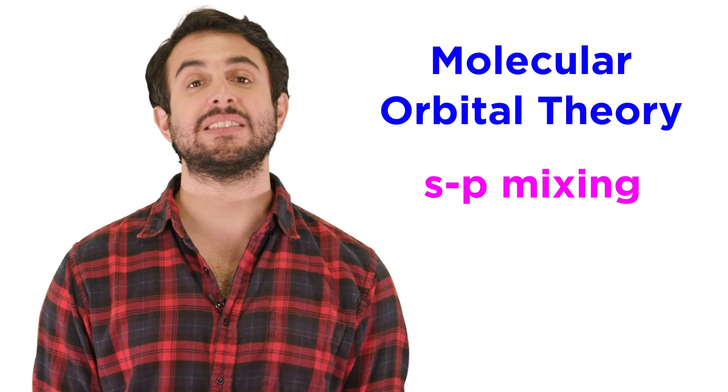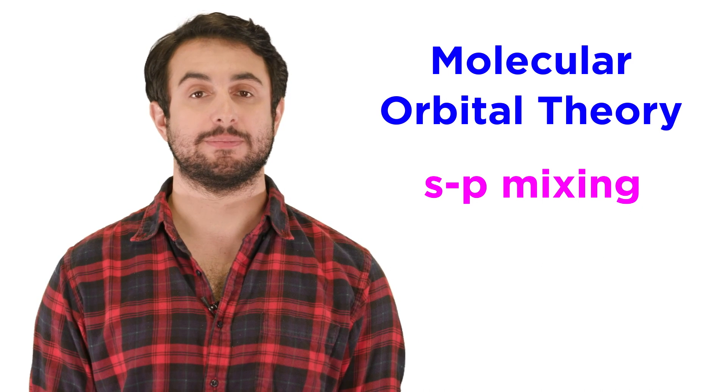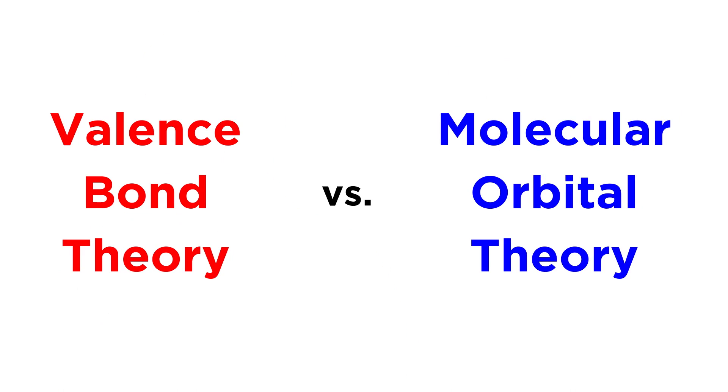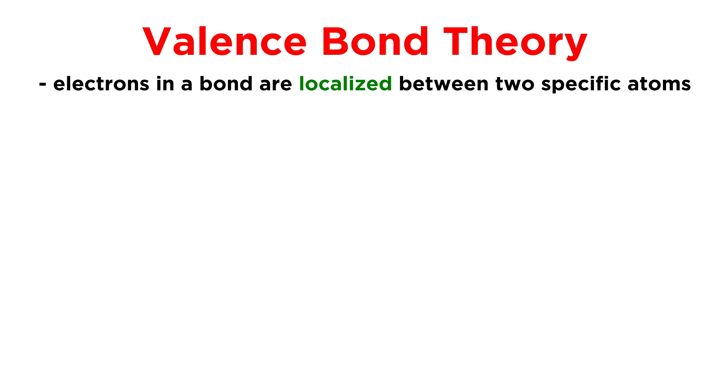But before we get into that, let's take some time to review the basics. First, let's compare valence bond theory and molecular orbital theory. Valence bond theory considers covalent bonds as being localized between a pair of atoms, resulting from the overlap of atomic orbitals or hybrid atomic orbitals.